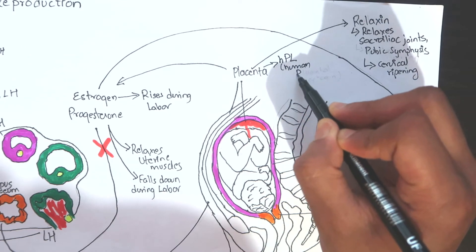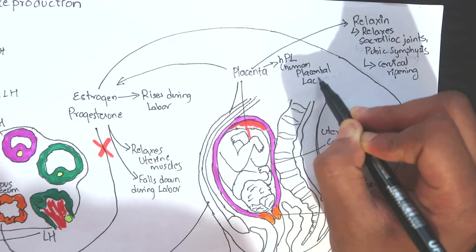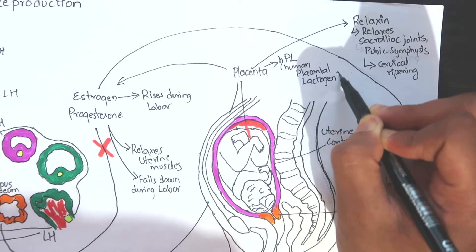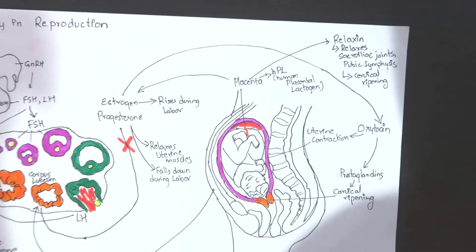Human placental lactogen is synthesized by the syncytiotrophoblast of the placenta. It causes maternal lipolysis and promotes transfer of glucose and amino acids to the fetus. As a potent angiogenic hormone, it also helps to develop fetal vasculature. It promotes growth and differentiation of breast for lactation as well.